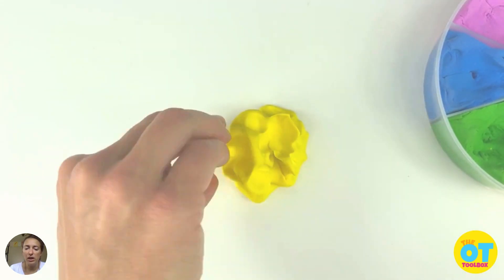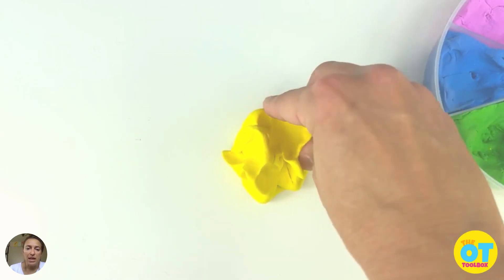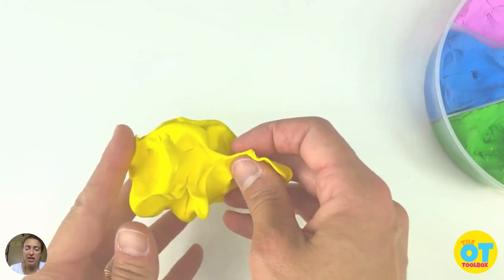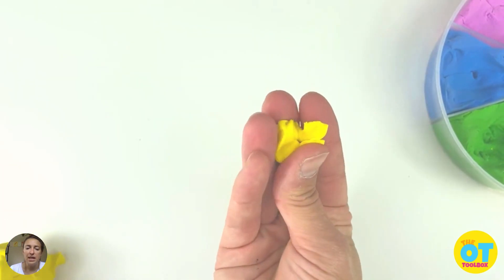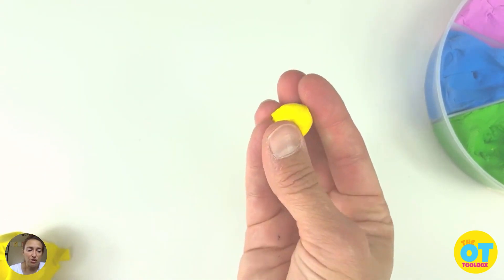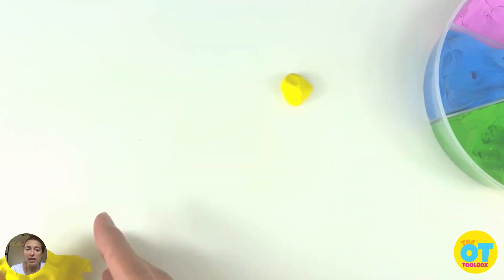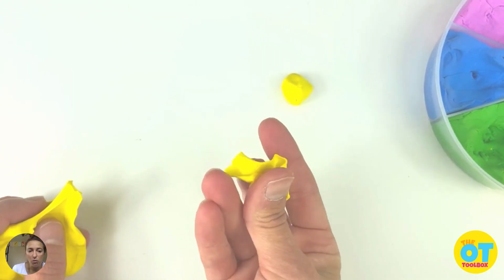Next, you're going to work on tripod grasp and pinching with just the tips of that Play-Doh. Pull up little bits. Next, that transitions really well into rolling little balls of Play-Doh with the fingertips.